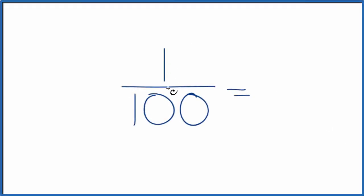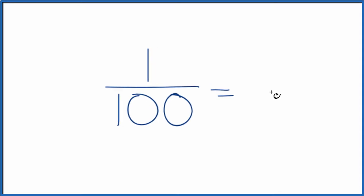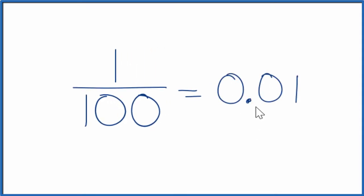Let's convert the fraction 1/100 to a decimal. So what we could do is we could just take 1 and divide it by 100 on a calculator. And when you do that you end up with 0.01. So the fraction 1/100 is equal to 0.01.